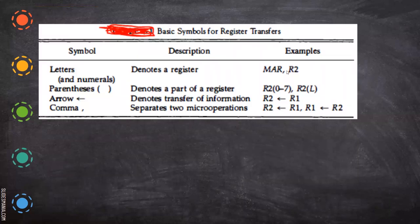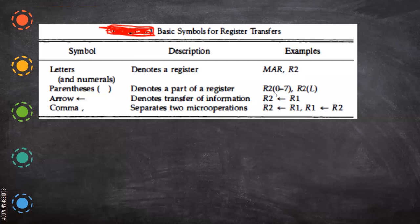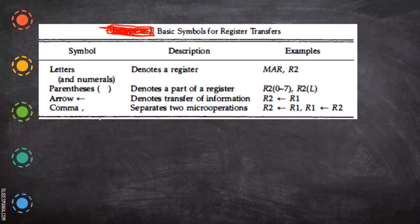Now, some basic symbols for register transfer representation: Letters and numerals — MAR means Memory Address Register, R2 means Register 2, and so on. Using parentheses, you can mention the part of the register — whether data from bits 0 to 7 or 8 to 15 is being transferred. You can also use 'L' to indicate the lower order bits. An arrow indicates the direction of transfer. A comma separates two micro operations that are taking place at the same time, in parallel — for example, R1 to R2 and R2 to R1 simultaneously, which can be considered a swap.